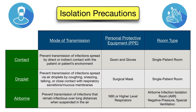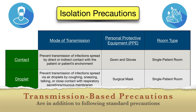Droplets tend to be larger and don't travel as far — usually only three to six feet — which is different from airborne precautions where droplets are smaller and travel much farther. These pathogens do not remain infectious over long distances, so a special ventilated room is not necessary. Airborne precautions help prevent transmission of diseases that remain infectious over long distances when suspended in the air as tiny residue particles called droplet nuclei. An N95 or higher level respirator is required, put on prior to entering the room. Healthcare workers undergo fit testing and education on respirator use. Patients should be in an airborne infection isolation room — a negative pressure room with 6 to 12 air exchanges per hour, with air released outside or recirculated through a special filtration system.